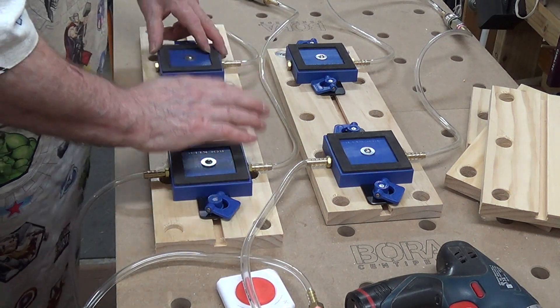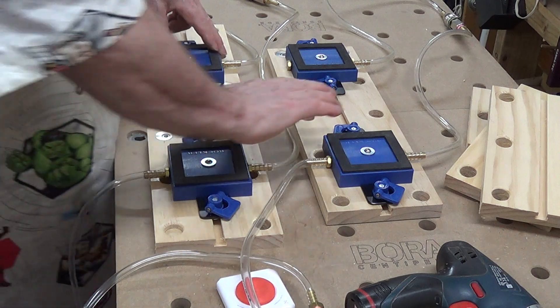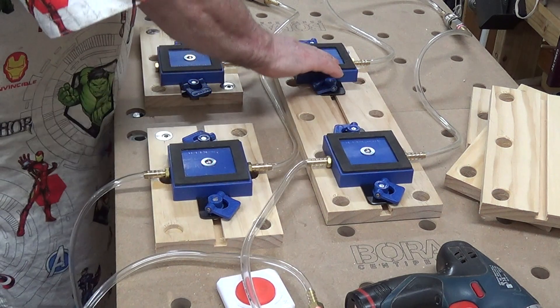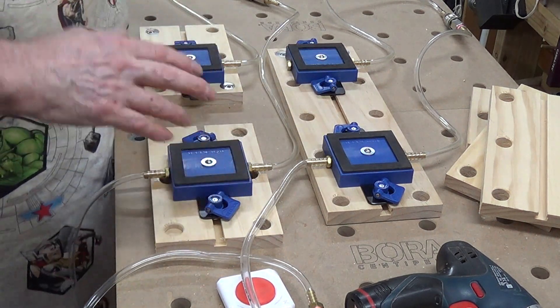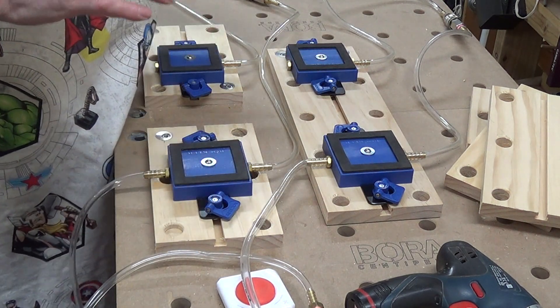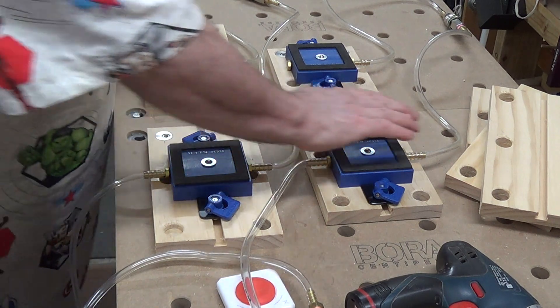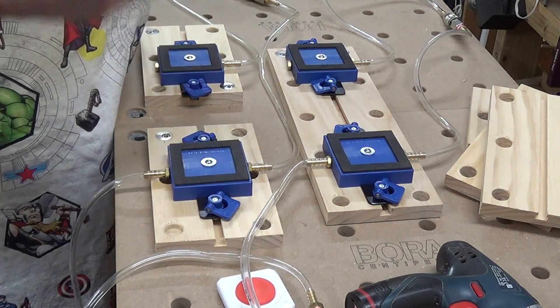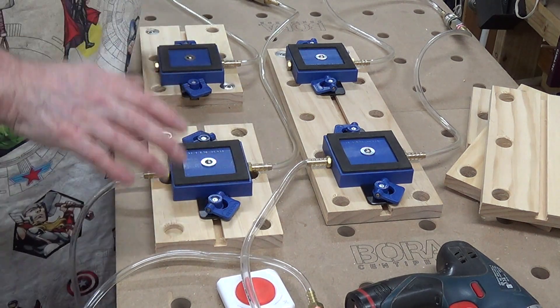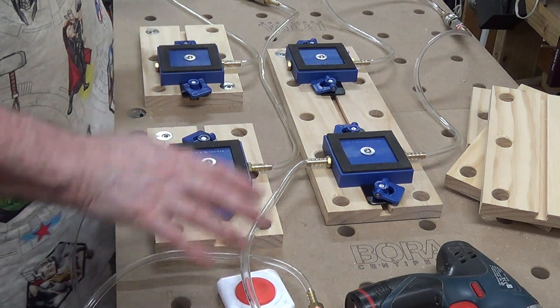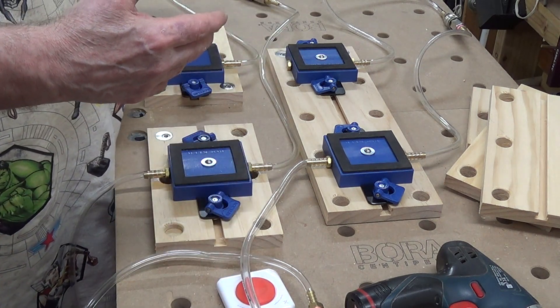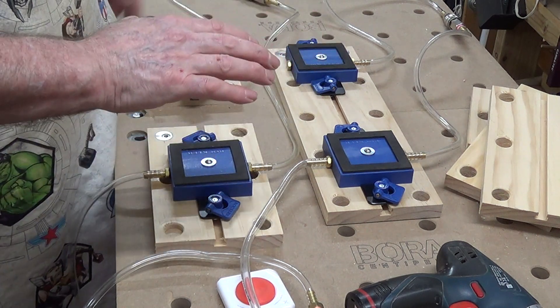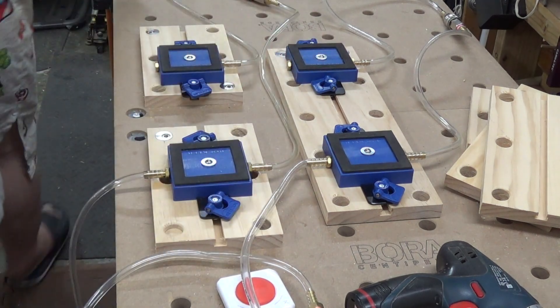Now, the biggest problem with when you get onto a big piece is, you've got to bear in mind that they all, each of these vacuum pumps act independently, so you've virtually got to get a full seat on each of these before they will hold on. Now, if your table is slightly wonky, or the timber you're trying to hold, or the big piece of timber you're trying to hold is not perfectly flat, you're going to have issues.